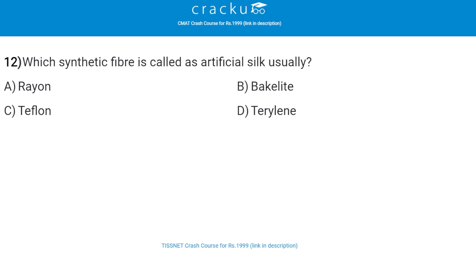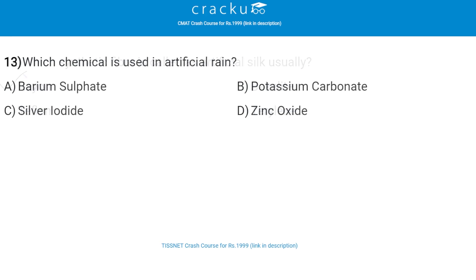Next: which synthetic fiber is called artificial silk? The correct answer is rayon, that is option A. Next: which chemical is used in artificial rain? The correct answer is silver iodide. The most common chemicals used for cloud seeding include silver iodide, potassium iodide, and dry ice.